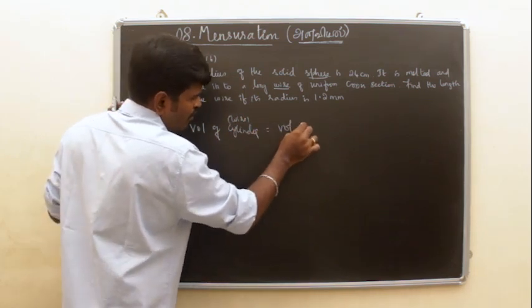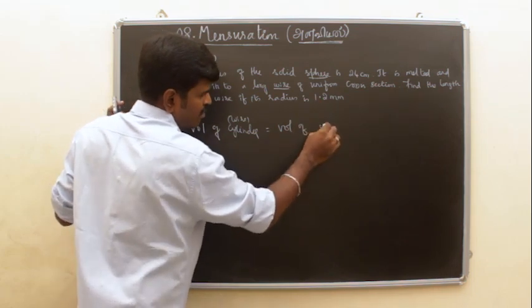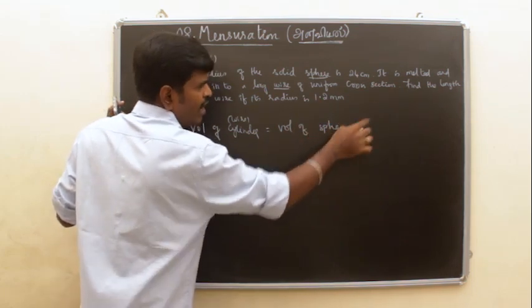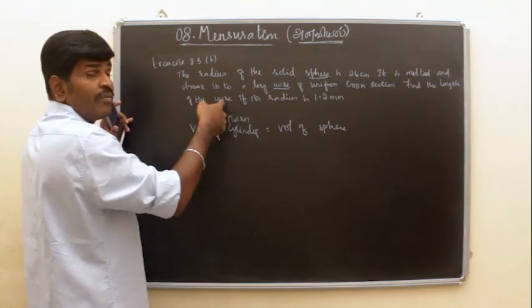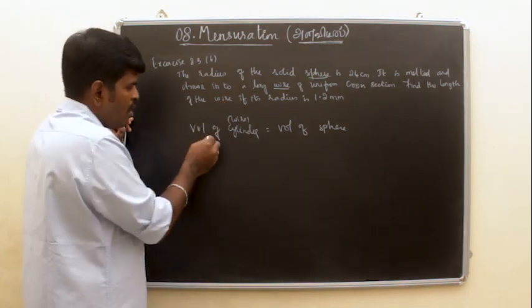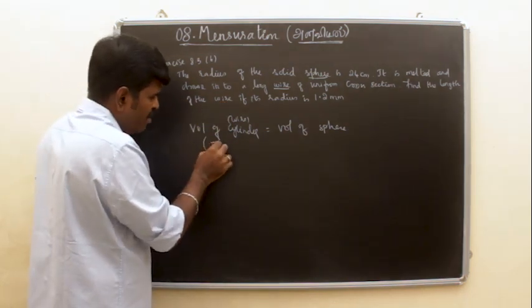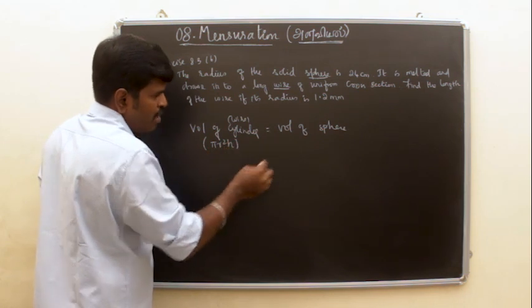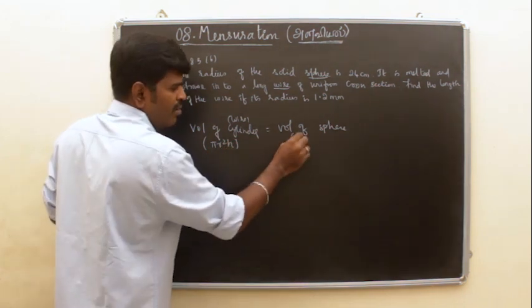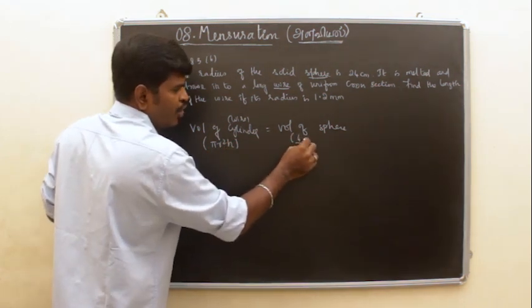Volume of wire equals volume of sphere. Formula: πr²h for cylinder, volume of sphere is 4/3πr³.